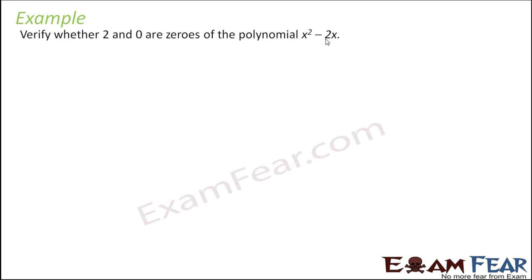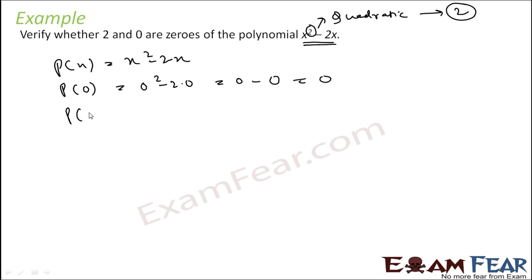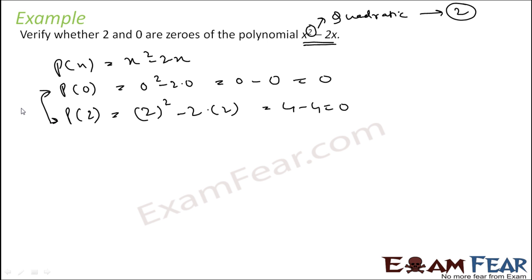Let's see one example to verify zeros for a polynomial. This is not a linear polynomial — the highest power is 2, so it's a quadratic polynomial. For linear polynomial, the maximum number of zeros is 1; for quadratic, the maximum is 2. Let's check if 0 and 2 are zeros. Putting x=0: 0 squared minus 2 times 0 equals 0. Putting x=2: 2 squared minus 2 times 2 equals 4 minus 4 equals 0. So both 0 and 2 are zeros of this polynomial.